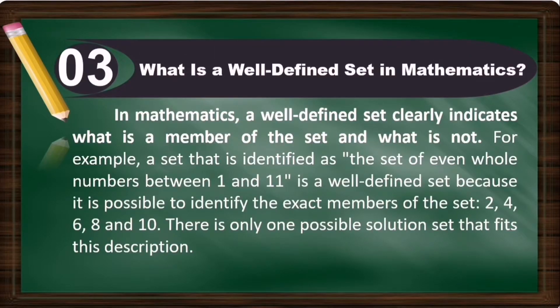Now, we discussed earlier about the definition of a set. So we said that it is well-defined. In mathematics, a well-defined set clearly indicates what is a member of the set and what is not. For example, a set that is identified as the set of even whole numbers between 1 and 11. This is a well-defined set because it is possible to identify the exact members of the set: 2, 4, 6, 8, and 10.